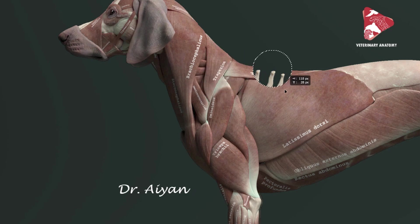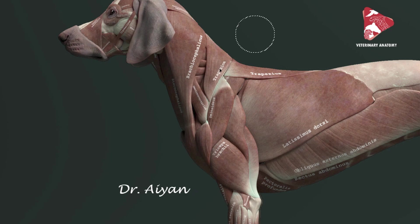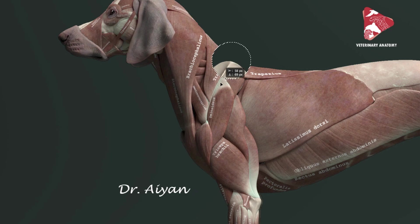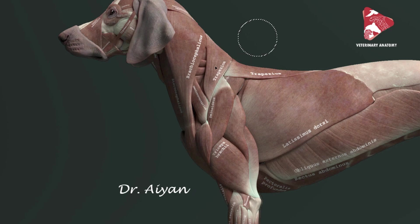The cervical part of the trapezius muscle starts from the median raphe and from the nuchal ligament, which we cannot see here because it's not a bone. The cervical part of the trapezius muscle also inserts to the spine of the scapula — the two proximal thirds of the scapula. So it starts from the neck region and inserts to the spine of the scapula. That was the trapezius muscle.